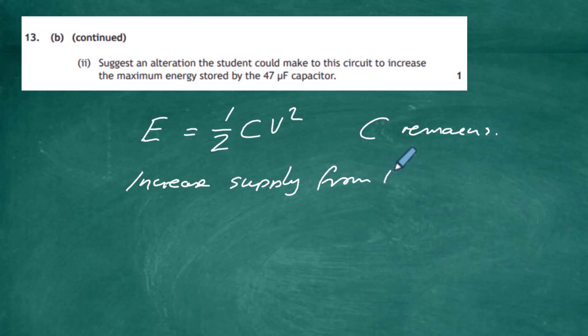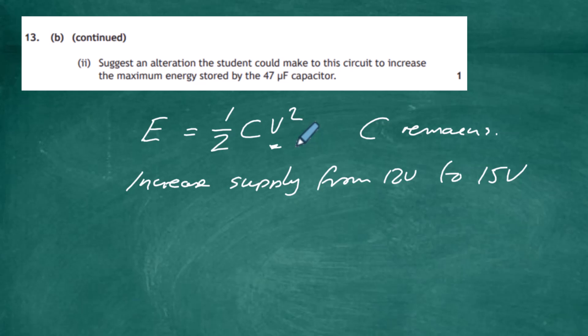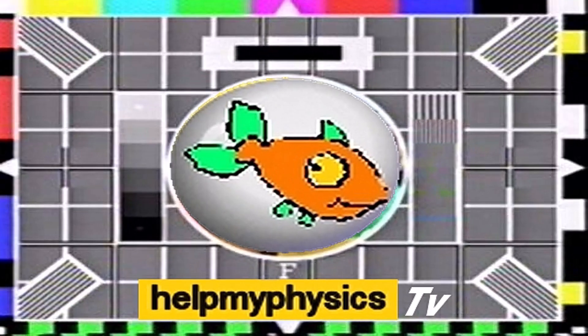Increasing the supply voltage from 12 volts to 15 volts means there will be more potential difference across the capacitor, which increases V², which in turn increases the energy stored. So the suggested alteration is simply to increase the supply voltage to 15 volts, giving a larger energy stored in the capacitor.